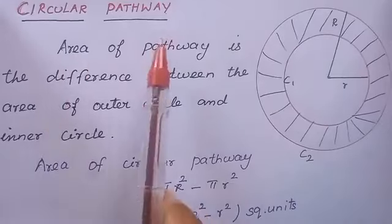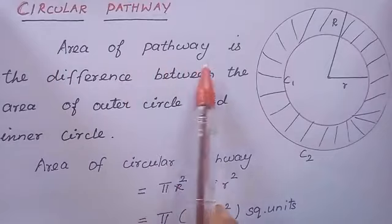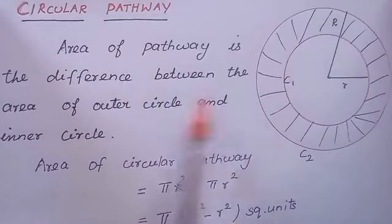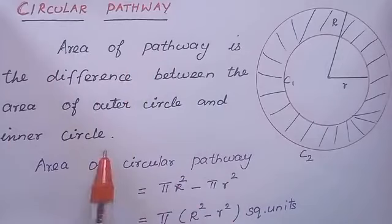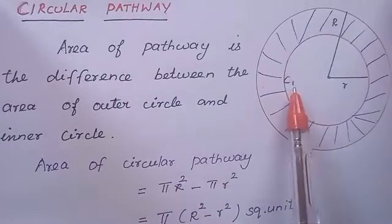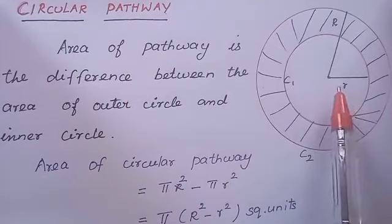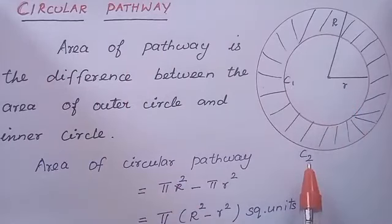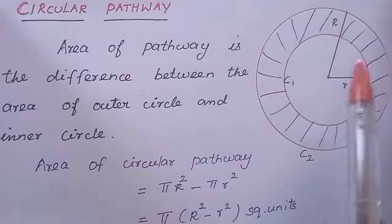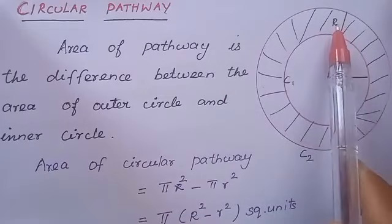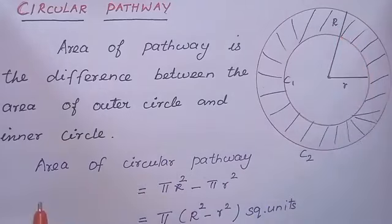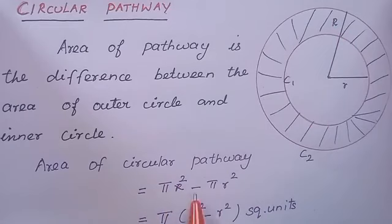Circular pathway: the area of a pathway is the difference between the area of the outer circle and the inner circle. Here, C1 is the inner circle with radius small r. C2 is the outer circle with radius capital R. Area of circular pathway equals π R² minus π r², where πR² is the area of the outer circle and πr² is the area of the inner circle.